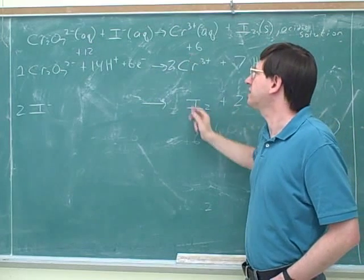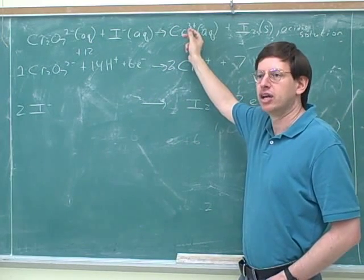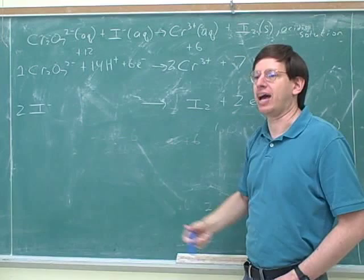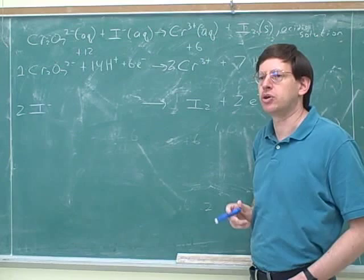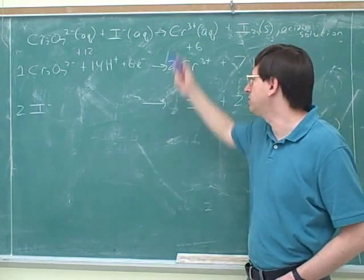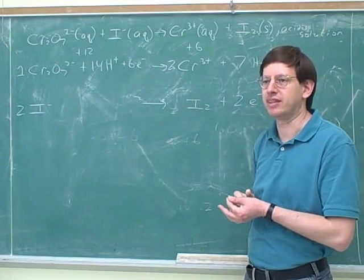What we need to do now, though, is add these together to go back to the overall reaction. But when we add them, the electrons have to balance. And they wouldn't balance yet because there's six electrons here and two electrons here. So that was what that step was saying. What do we have to do to make the electrons balance before we can add these?